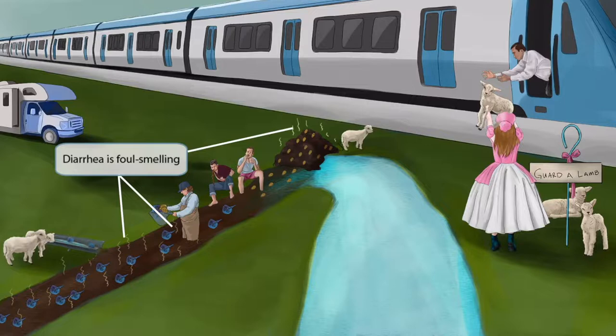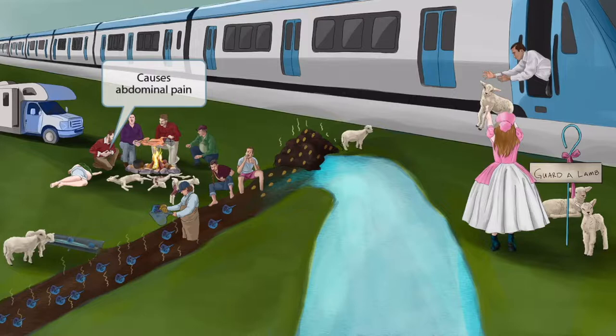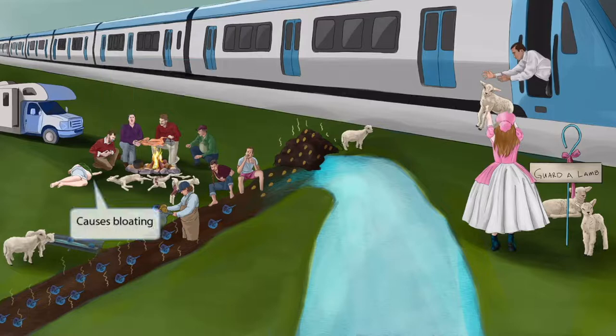Now notice all these other campers who have eaten these poor little lambs — I guess it was really important for this girl to start her guard-a-lamb adoption program after all. Fortunately, we can see these two fellas are paying for their crimes. This guy is grabbing his belly in agony — this represents the abdominal pain that Giardia can cause. And this guy on the far left ate most of the lambs, so he's especially bloated; look at his belly poking out under his shirt. This represents the bloating that Giardia can cause.